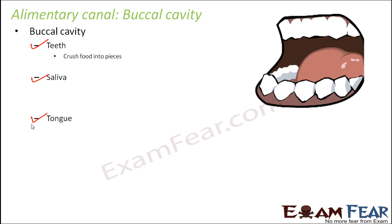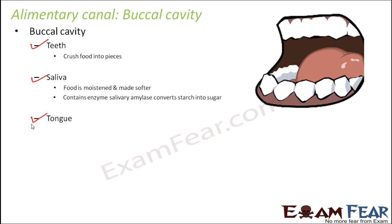Teeth are sharp structures that crush food into pieces. The next step after ingestion is digestion — breaking down complex food into simple forms. All 32 teeth are shaped differently: some have sharp pointed ends for biting, some have flat wide ends for chewing. Together they help in crushing complex food into smaller pieces — this is physical or mechanical digestion.